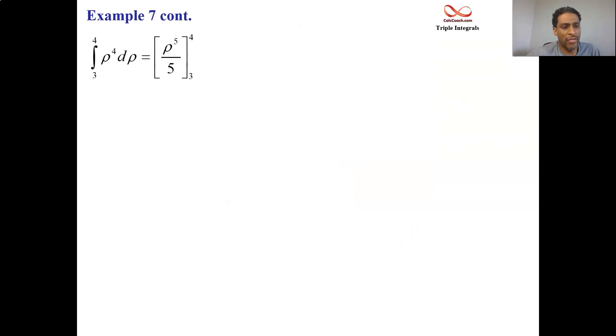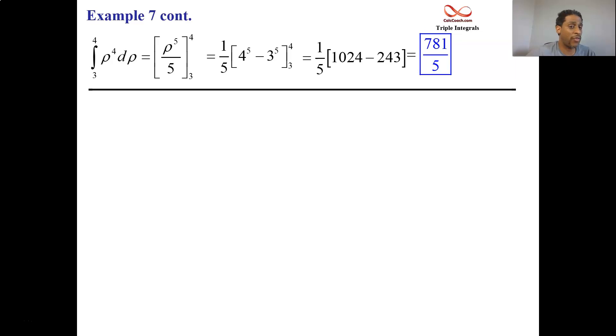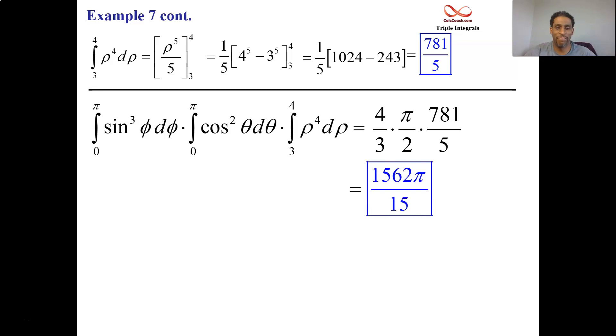So then we have this rho fourth. This is kind of unfortunate. You have to take 4 to the fifth minus 3 to the fifth, unfortunately. 4 to the fifth, the same thing as 2 to the 10th. Hopefully that's recognizable as 1024. And then 3 to the fifth is taking 81 and times it by 3, so 243. Difference there is 781, some strange number. But anyway, there we have it. 781 over 5. And then you multiply the three parts together over 15. You double 781 and you get 1562.